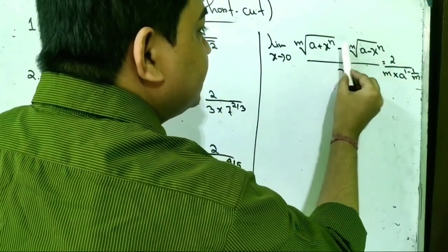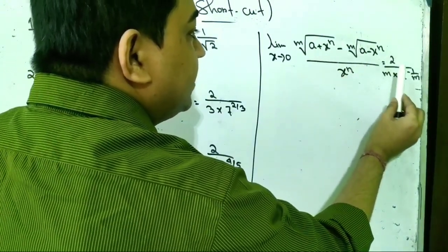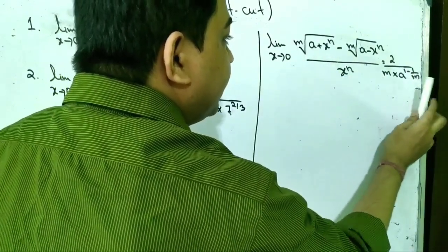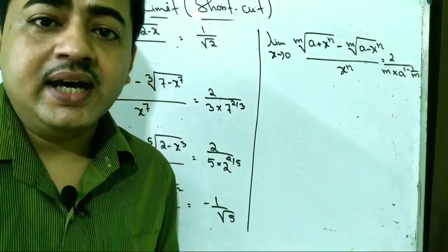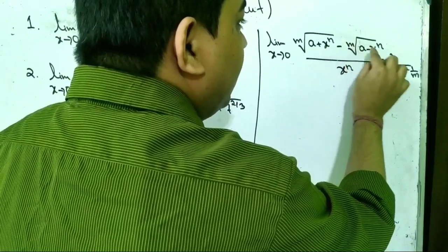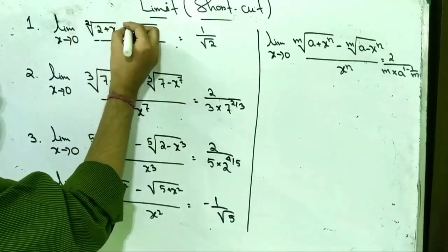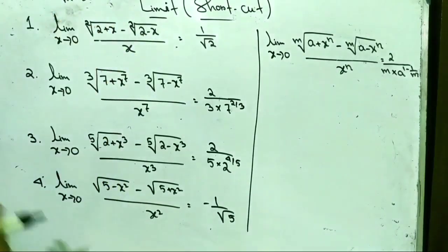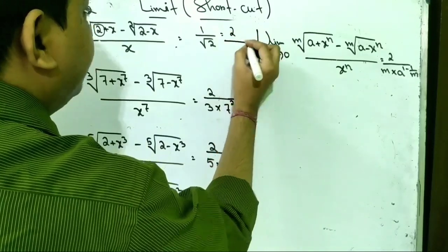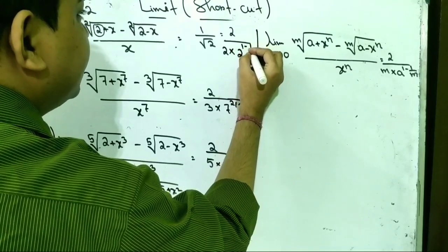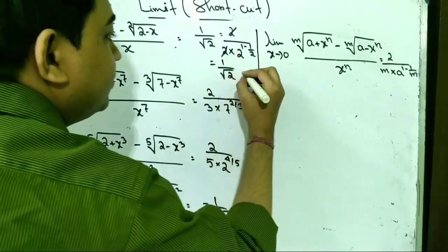Just note that the plus term comes first and the minus term comes second. For the first problem, we have root — meaning m equals 2 — and a equals 2. So: 2 by 2 into 2 to the power (1 minus 1 by 2). The 2s cancel, giving 1 by 2 to the power one-half, that is 1 by root over 2. First problem complete.